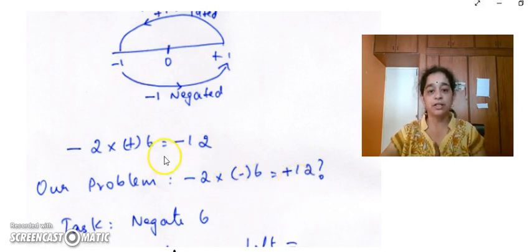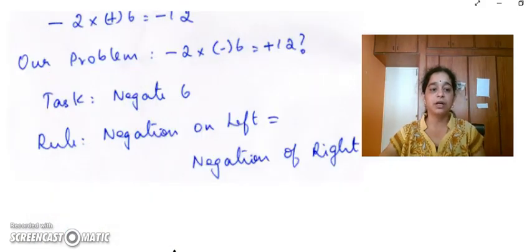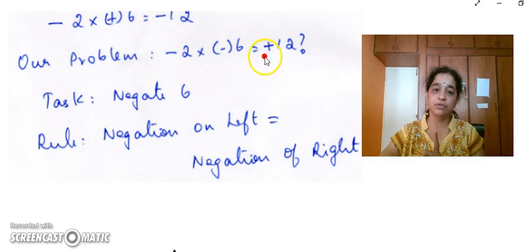So what is our task now? The difference between these two is we have to negate 6. So a negation on the left hand side is same as negation on the right hand side. Whatever we do on the left hand side, we have to do the same thing on the right hand side in order to preserve the correctness of the equation.